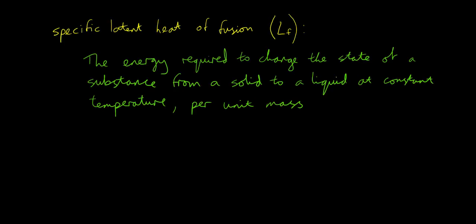We can calculate how much energy is needed for a substance to change state by using a value known as specific latent heat. Specific latent heat comes in two forms. Specific latent heat of fusion: this is the energy required to change the state of a substance from a solid to a liquid at constant temperature per unit mass.